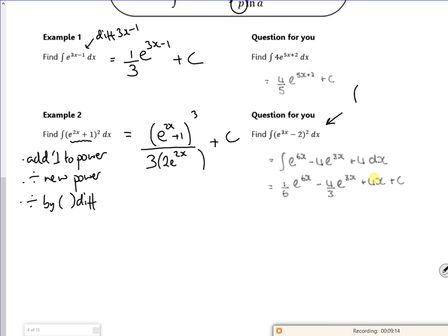So that would be e to the 3x minus 2 cubed over 3 lots of, differentiate the bracket 3e to the 3x. If you expand the bracket, I'm sure it will work. Because you want to like e to the 9x and divide by e to the 3x. You can actually see the first turn coming out. So... I don't know. I think they're mad. Never mind. Right, so I've done the fast one. All good. Right, see you later for the next bit.